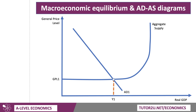We'll use the Keynesian model in this video — we may well do another video for the neoclassical one. Looking at the Keynesian model with the aggregate demand curve shown in this diagram, there is an equilibrium at Y1 and GPL1 where aggregate demand is in balance with supply.